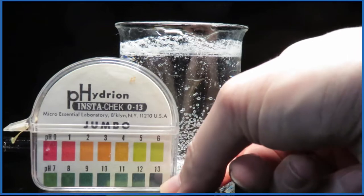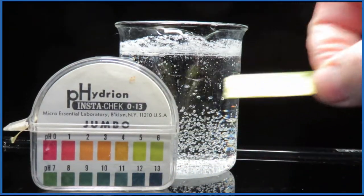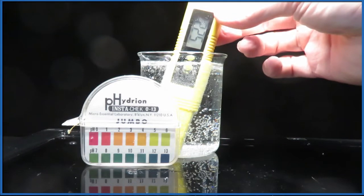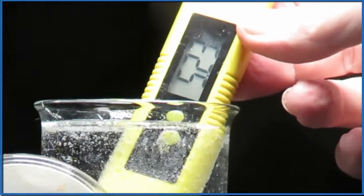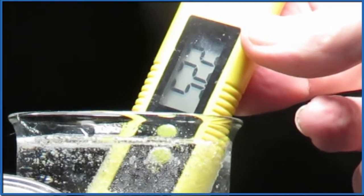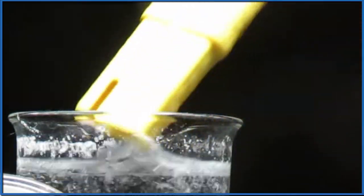But we can also test that. We can use a pH meter to get a more accurate reading. When I put the pH meter in, we get a pH of 5.2, right about 5.2. So that makes Alka-Seltzer a bit alkaline, or basic, which isn't surprising.